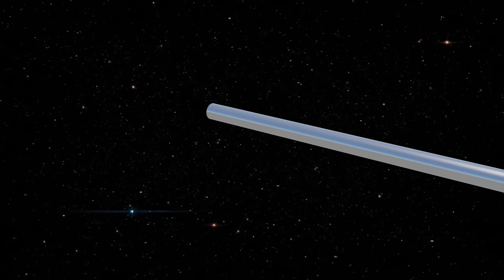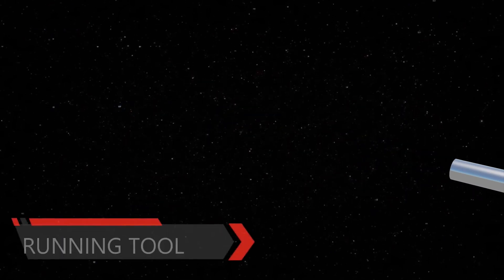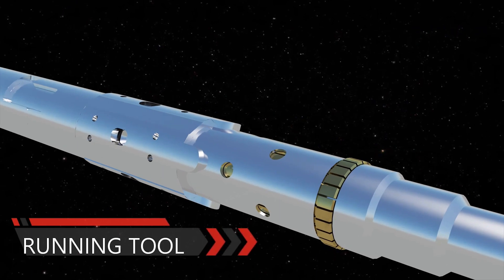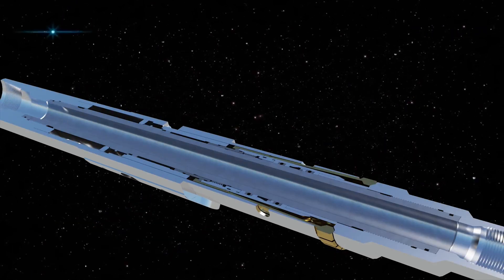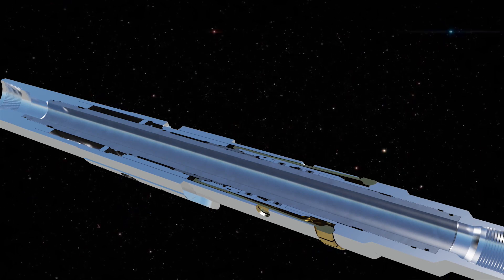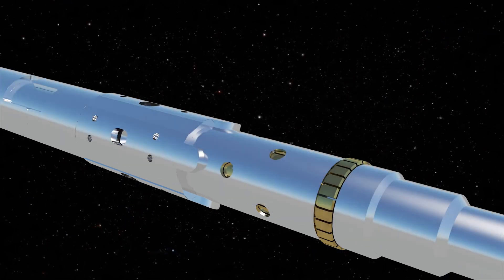After the required number of tubing joints, the hydraulic release running tool (HRTE) is connected to carry the outer string into the wellbore. It allows forceful rotation if required to work the outer string to bottom of the hole.